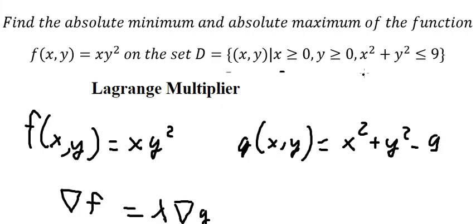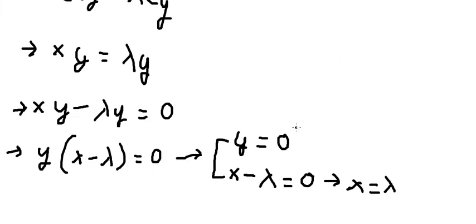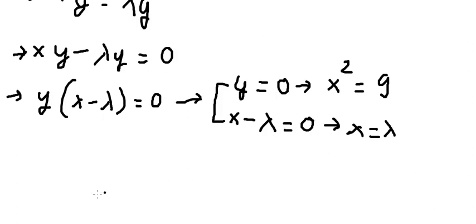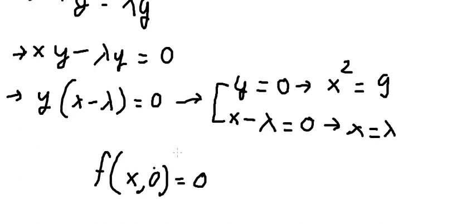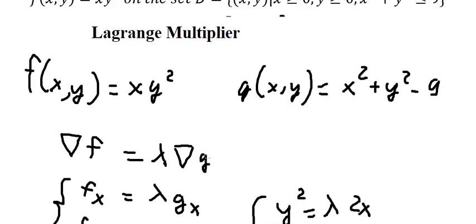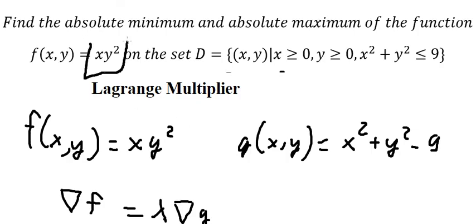When y equals 0, we substitute into the constraint and find x squared equals 9. However, if we put 0 in for y, we still get 0, because whether x is negative or positive, the result is still 0.